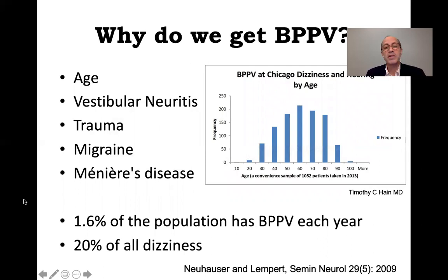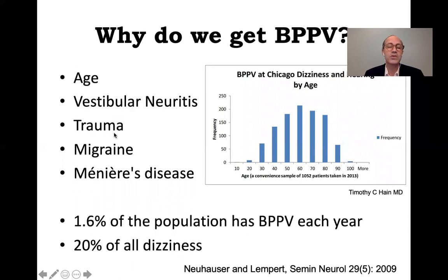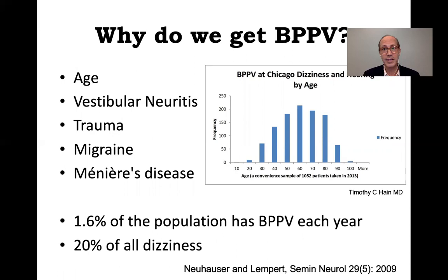BPPV increases in frequency with age, probably because of breakdown of some of these nets of protein. It also occurs as a secondary event in vestibular neuritis when the superior vestibular nerve is involved — cases of inferior vestibular neuritis show no increase in post-neuritis BPPV. Head trauma is associated with loss of otoliths which can lead to BPPV. Migraine is associated with a markedly increased incidence of BPPV — a migraineur has a 7.5 times higher probability of getting BPPV. Patients with Meniere's disease also have a much higher incidence, and since most of them have migraine, migraine may be the underlying cause.